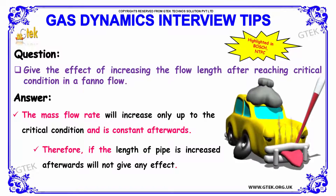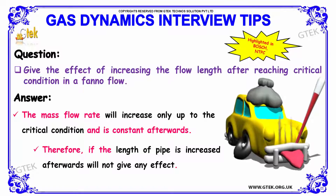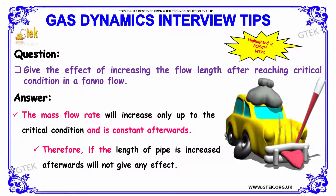Next question: give the effect of increasing the flow length after reaching critical condition in a Fanno flow. The mass flow rate will increase only up to the critical condition and is constant afterwards. Therefore, if the length of the pipe is increased beyond that, it will not give any effect.